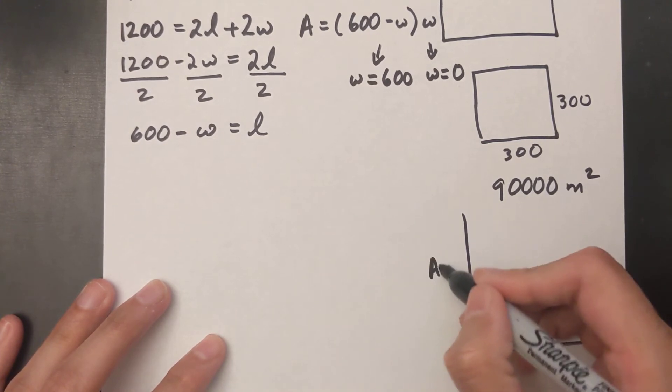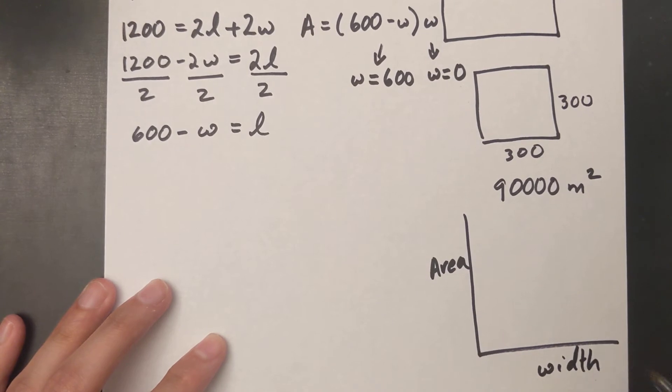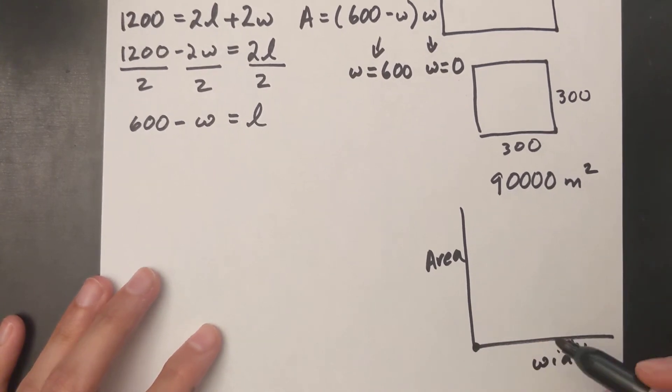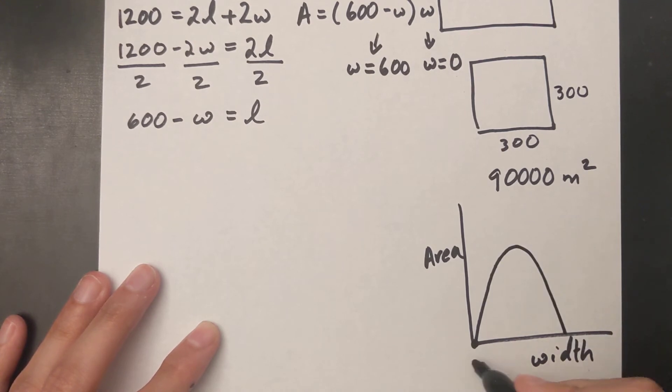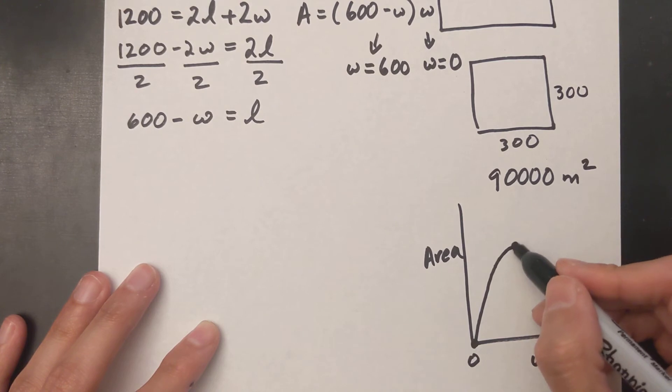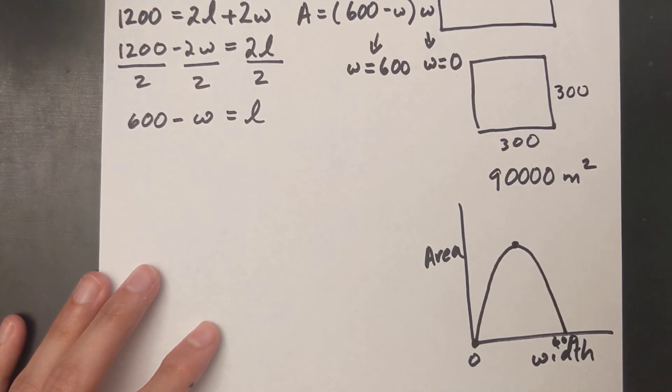I have a graph here for my area and over here is my width. And this equation looks like this - it's a quadratic equation. This is zero and this is 600. I need to find my maximum area, so that's the y value of this equation. So basically I just have to find my vertex.